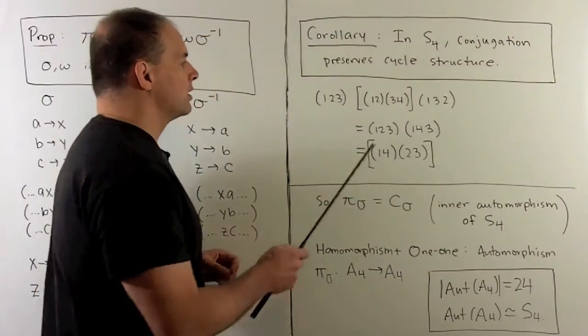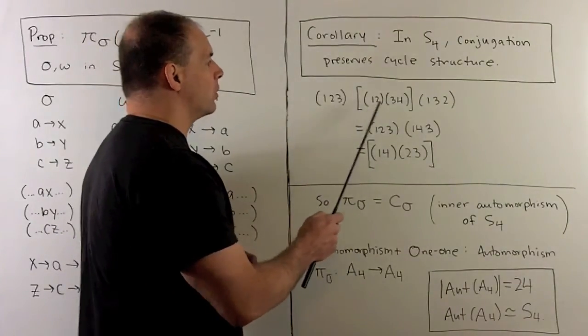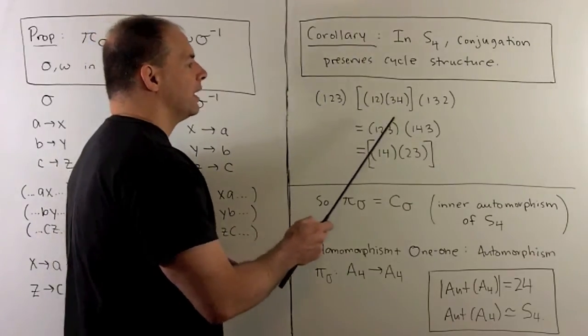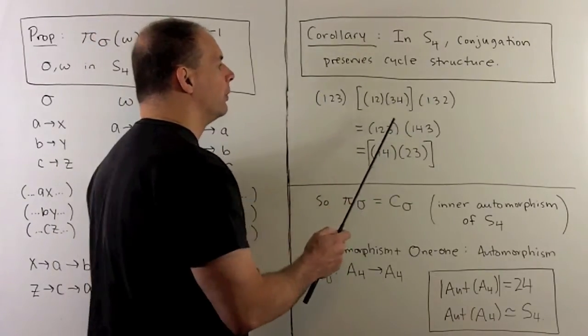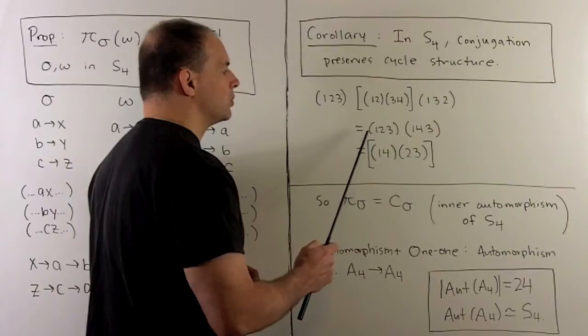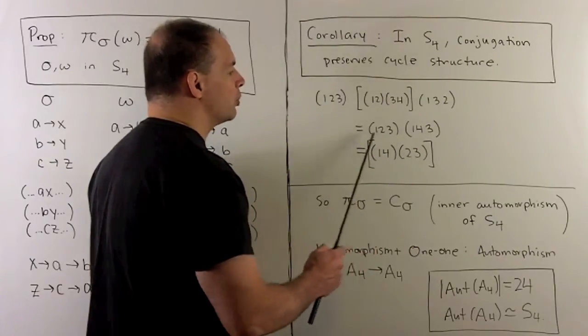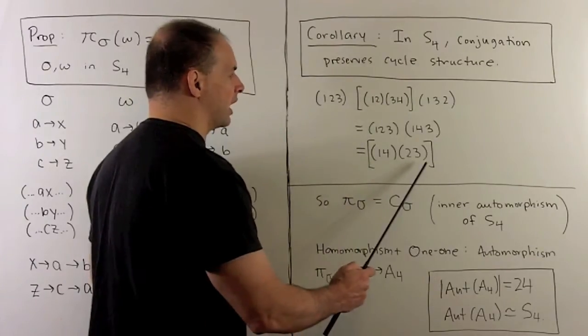For instance, let's take product of disjoint two cycles (1,2)(3,4). I have (1,2,3), its inverse is (1,3,2). Note if we conjugate, we have (1,4)(2,3). So the labels move around but the cycle structure is the same.